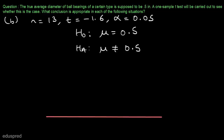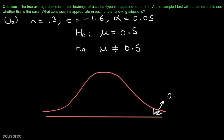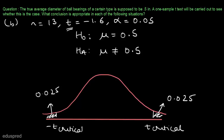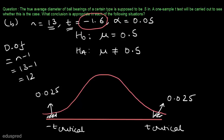The t-distribution looks the same — symmetric and bell-shaped. As this is a two-tailed test, we have 0.025 in each tail. We are given that t is equal to minus 1.6. The t-critical value is the same as in part A because the value of n and the value of alpha have not changed. So t-critical is 2.179 and minus t-critical is minus 2.179. We calculated this in part A and can use the same value here.